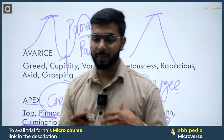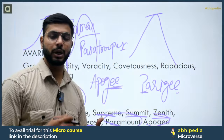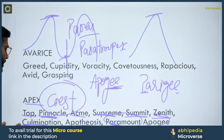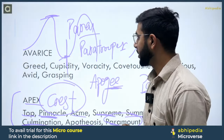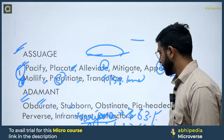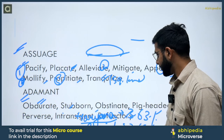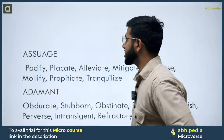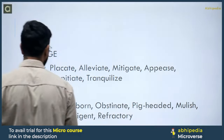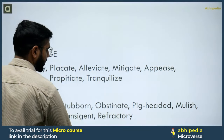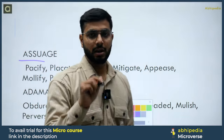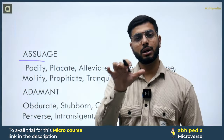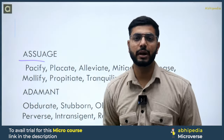When you read these words again and again, they will automatically get memorized. There is no shortcut — if you are putting in those efforts, definitely you will get something in return. The next word is Assuage. What is the meaning of Assuage? Assuage का मतलब होता है किसी को शांत करना — to pacify someone, to soothe their anger. That is called Assuage.